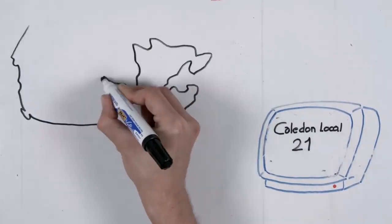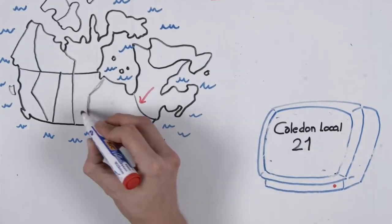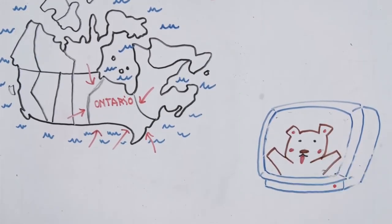Elliot discovered Channel 21. It was called Caledon Local 21 because it was broadcasted from the town of Caledon, close to Ontario, in Canada.